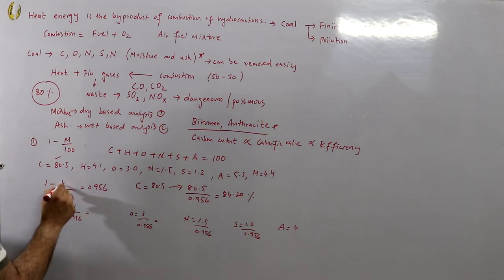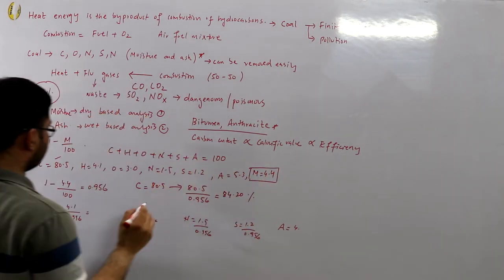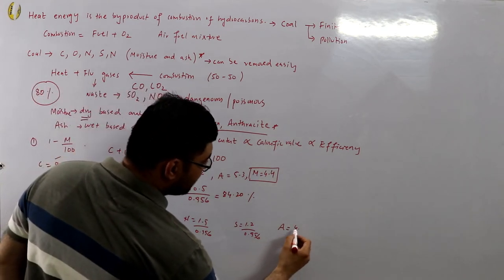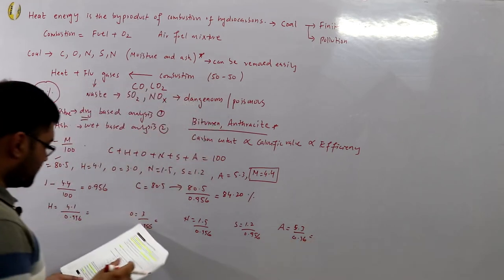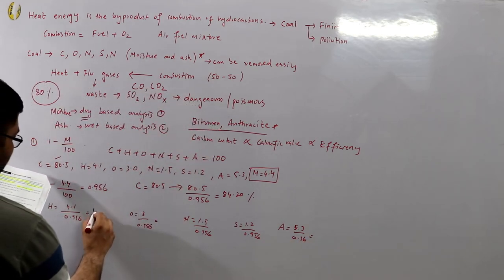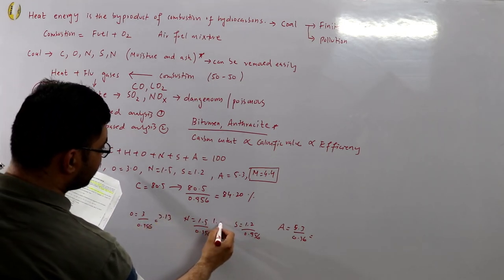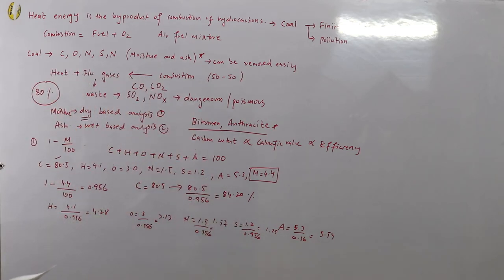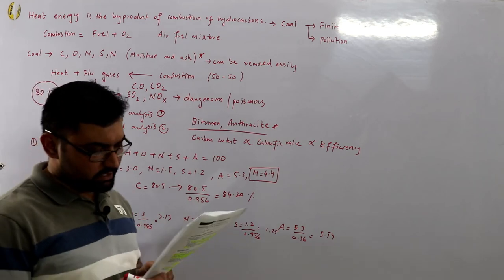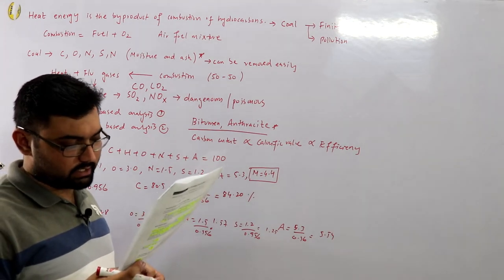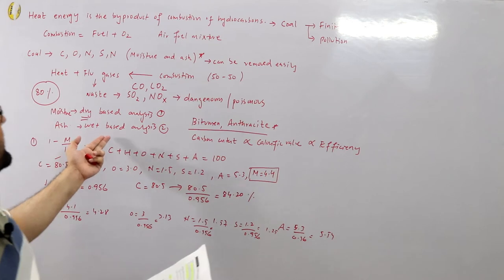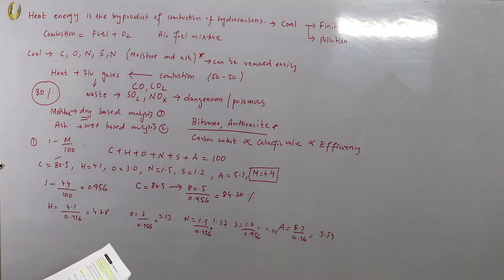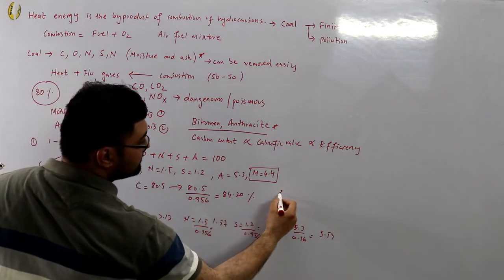The full dry-based analysis results are: carbon 84.20%, hydrogen 4.28%, oxygen 3.13%, nitrogen 1.57%, sulfur 1.25%, and ash 5.54%. Adding all these up gives approximately 100%. The key result is that the carbon content has increased from 80.5% to 84.20% simply by removing moisture. For wet-based analysis — in which only the ash content is removed — do it for yourself as homework.